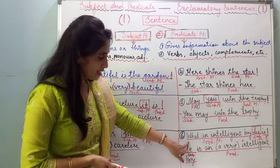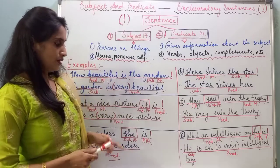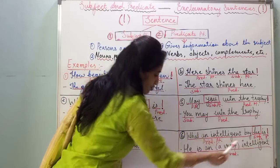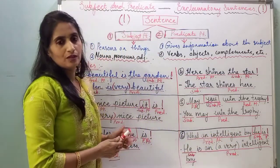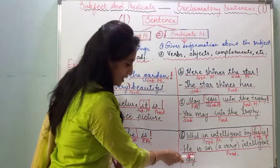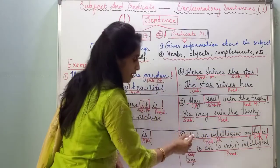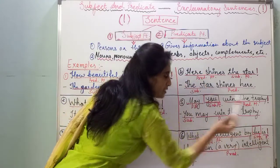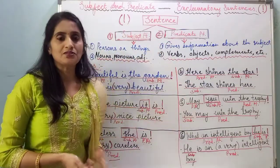The next sentence is 'What an intelligent boy he is!' The conversion is 'He is an intelligent boy,' or 'He is a very intelligent boy.' The subject is 'he,' so 'he' is the subject part. 'What an intelligent boy' is the predicate part, and 'is' is also part of the predicate part.